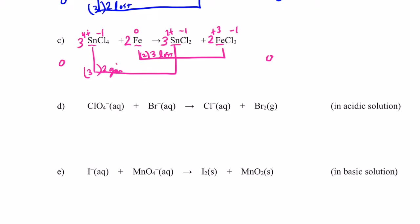Welcome back. Now let's assign each atom an oxidation number. Oxygen is two negative in the perchlorate ion — that makes the chlorine positive seven. Bromine is negative one — it's the bromide ion. Chlorine is negative one — it's the chloride ion. And bromine in its elemental form has an oxidation number of zero. Step two we have to do this time, because the atoms that changed oxidation number do not balance. There's one chlorine on both sides, but only one bromine on this side and two on the other. So I need to put a two in front of the Br negative — now that atom is balanced.